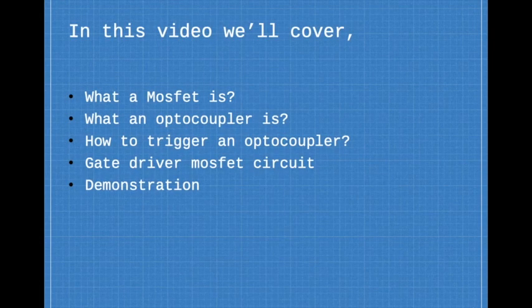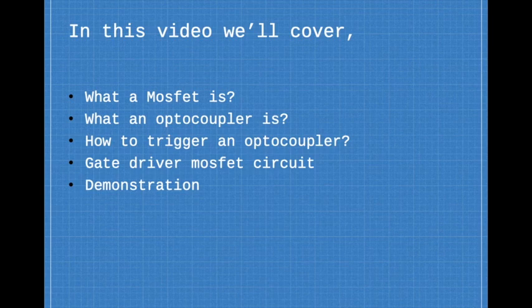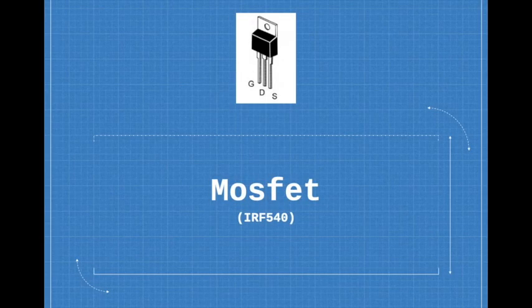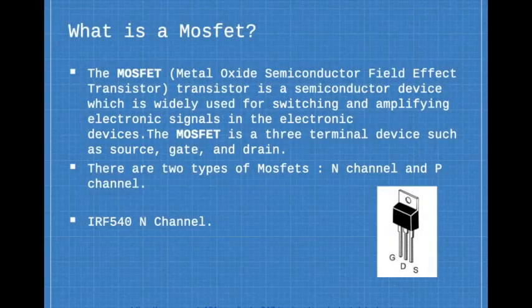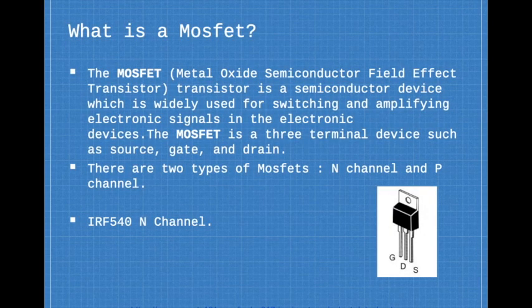So we'll be answering these questions. Now I'll be explaining what a MOSFET is. In particular, we're talking about the IRF 540. The MOSFET stands for the metal oxide semiconductor field effect transistor. It is a semiconductor device which is widely used for switching and amplifying electronic signals in electronic devices.